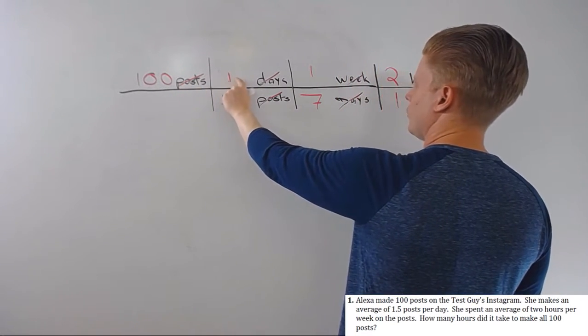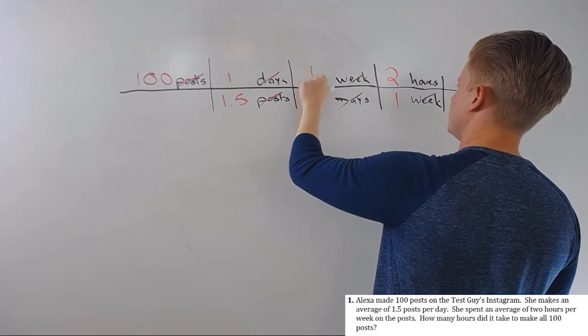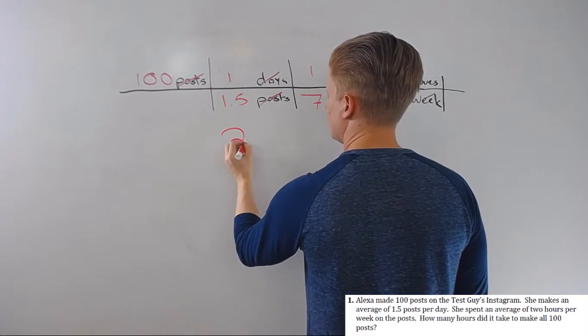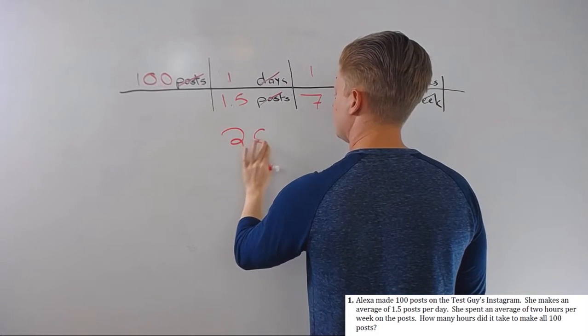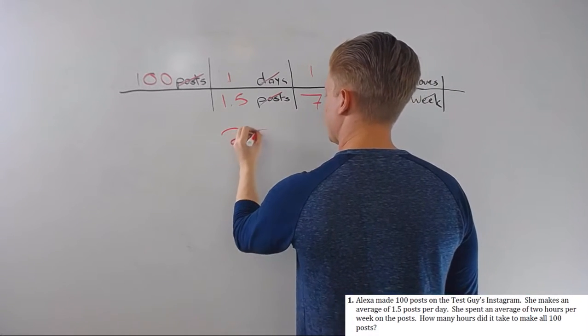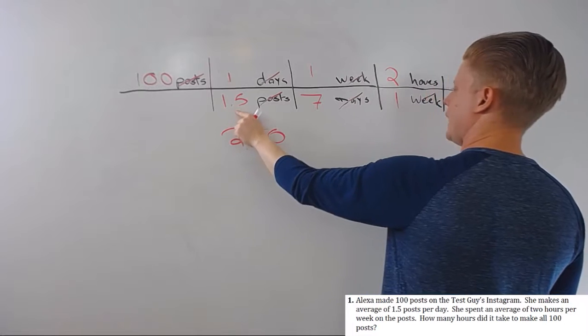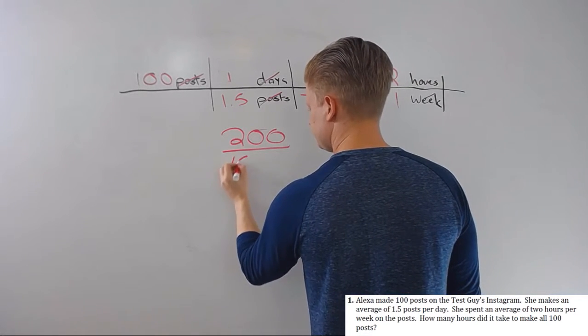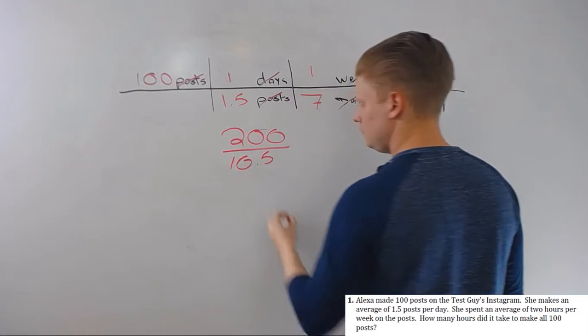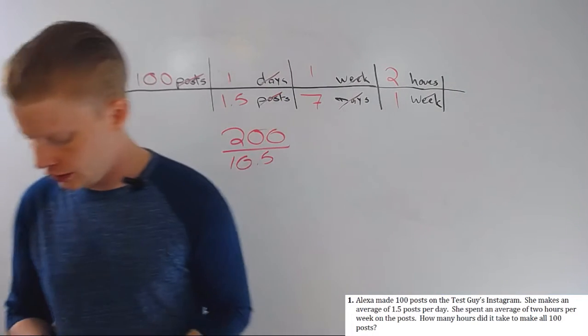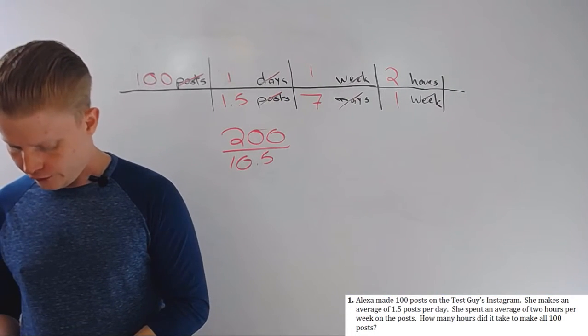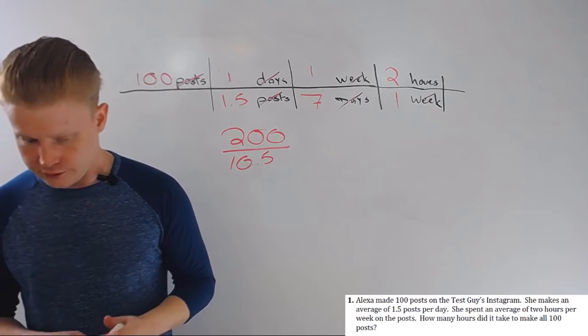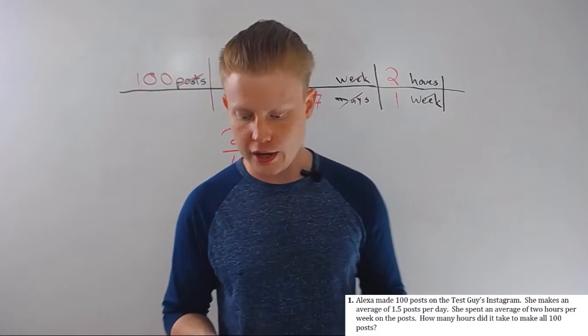Two hundred, not two thousand. One and a half times seven is ten point five. And then we divide those: two hundred divided by ten point five is nineteen and a little bit of change—nineteen point oh four. That's how this works.